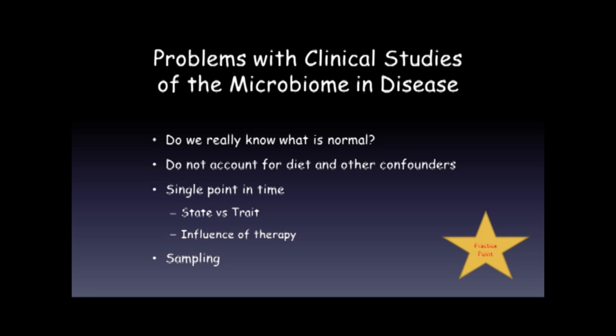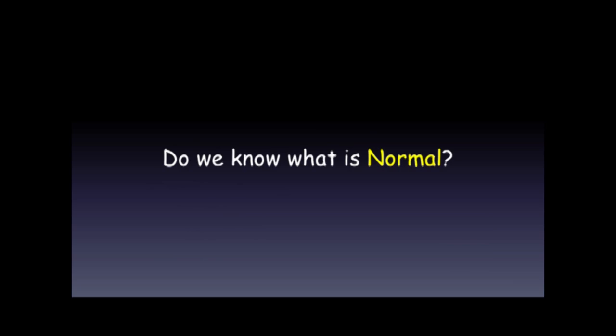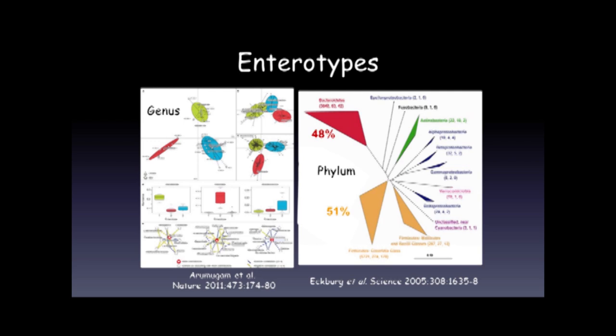Do we know what is normal? There's been a lot of work done on this. There are large consortia in the U.S., in Europe, now in Asia, and throughout the world looking at large community samples of the fecal microbiome. We do know that in normal individuals, most of the bacteria belong to two phyla — the Firmicutes and the Bacteroidetes — which account for the vast majority of bacteria.